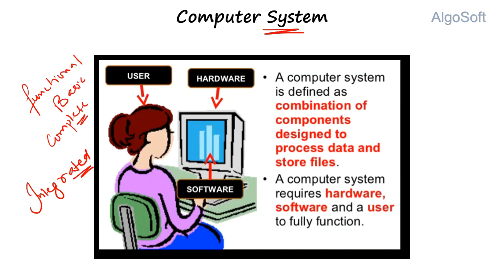In general, just remember: a computer system is a combination of different integrated components designed to fulfill a specific purpose. They can be used to process data, store files. The components are hardware, software, and a user. We as users are using these devices. Why am I telling you these terms? Because later on we would be using them, and you would be talking to your senior developers in these terms, so you need to understand what they actually mean.